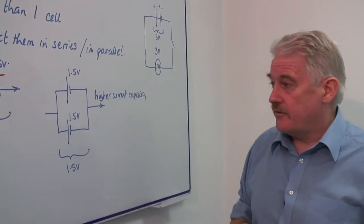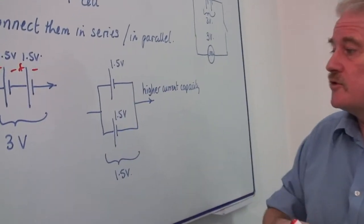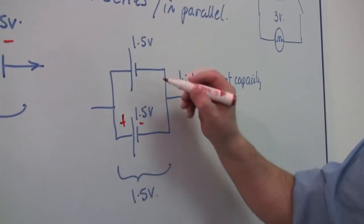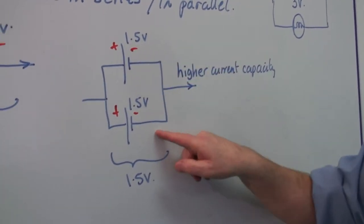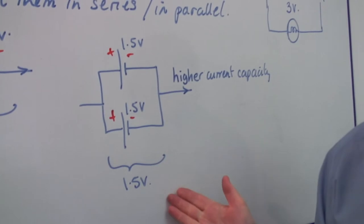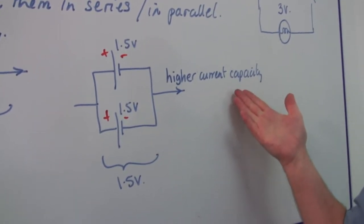And the only way of doing that is to connect the two cells in parallel. This is also a battery, but it has a higher current capacity. In fact, this is a 1.5 volt battery.